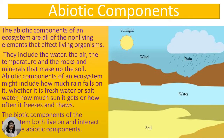The abiotic components of an ecosystem are all of the non-living elements that affect living organisms. They include water, air, temperature, rocks, and the minerals that make up the soil.